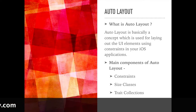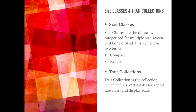Let's get started with these terms. First, what are size classes? Size classes are classes which are categorized for multiple sizes of iPhone or iPad. It is defined in two terms: one is compact and the second one is regular. Compact relates to the minimum width or minimum height, and regular relates to the maximum width or maximum height of a particular screen size.